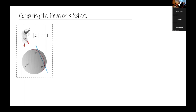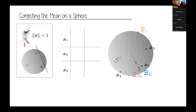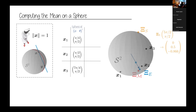If we want to compute the mean for a set of data points — x1, x2, and x3 — we can do this in different ways. One way is to use spherical coordinates, to guarantee that we stay on the sphere. Here we have the representation of these points in spherical coordinates, and if we just compute the mean, this mean is not in the support of the data. So there might be something off here.